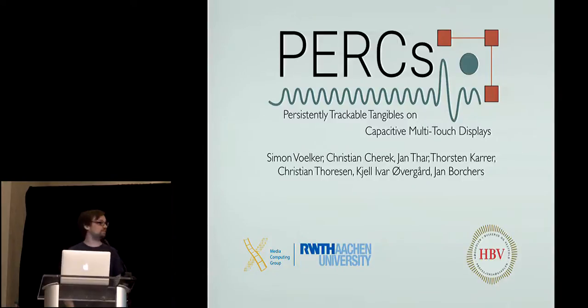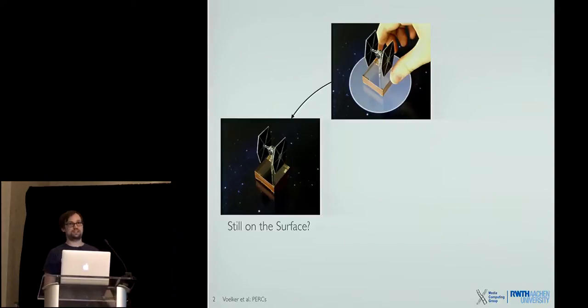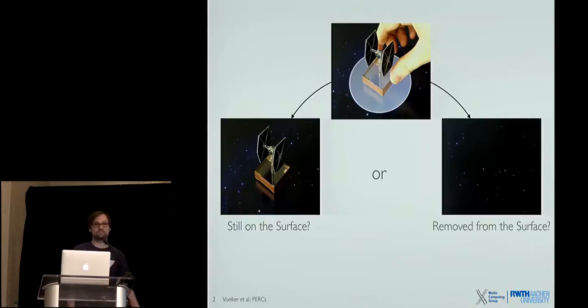Hello everybody, my name is Simon and I'm going to talk about tangibles on capacitive screens. If we use tangibles on capacitive screens we usually have the problem that they can only be detected when we touch them. This leads to a particular problem that we don't know if we let go of these tangibles if they're still on the surface or not, so the system cannot tell the difference because touch points directly disappear.